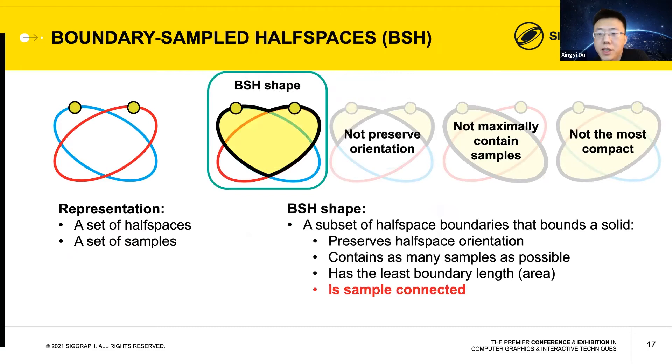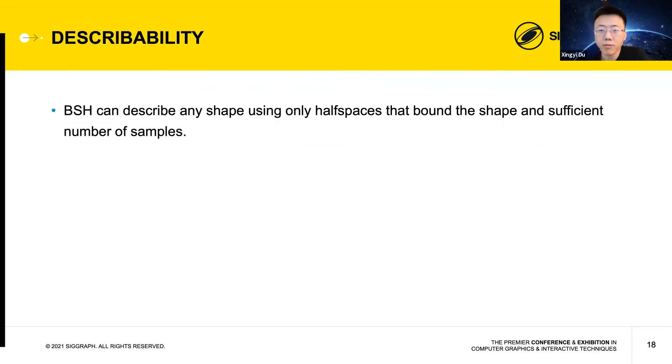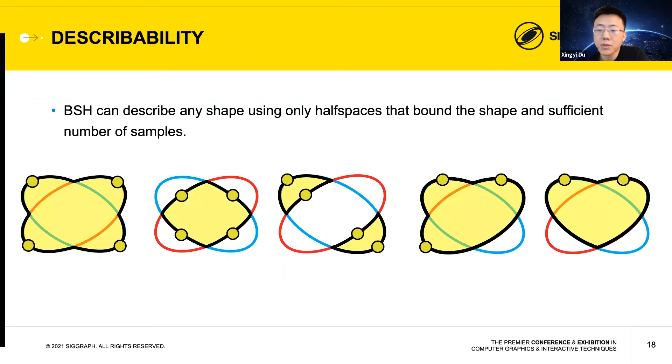BSH shape defined this way has many nice properties. An important property of BSH is its describability. BSH can describe any shape using only half spaces that bound the shape and sufficient number of samples. Here we show a number of shapes expressed using our representation. The describability of BSH is a key benefit over CSG. For example, CSG has to use hidden half spaces on the last two examples, while our representation never needs hidden half spaces.